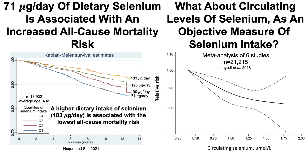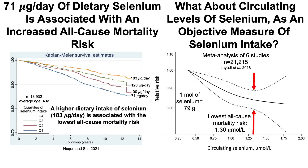Looking at circulating selenium versus all-cause mortality risk: this is a meta-analysis of six studies with about 21,000 subjects, with all-cause mortality risk on the y-axis and circulating selenium concentration on the x-axis. The lowest all-cause mortality risk was present at 1.3 micromoles per liter. Converting: since one mole of selenium is 79 grams, 1.3 micromoles per liter equals approximately 103 micrograms per liter.